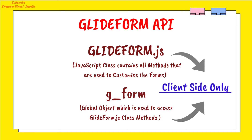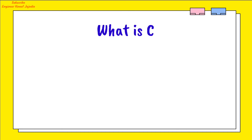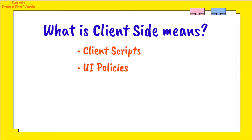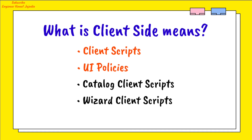The client side means the scripts written in client scripts, UI policies, catalog client scripts, and wizard client scripts. These are the areas where we can use the GlideForm methods with the help of the g_form global object. Some of these methods can also be used in catalog client scripts and wizard client scripts.